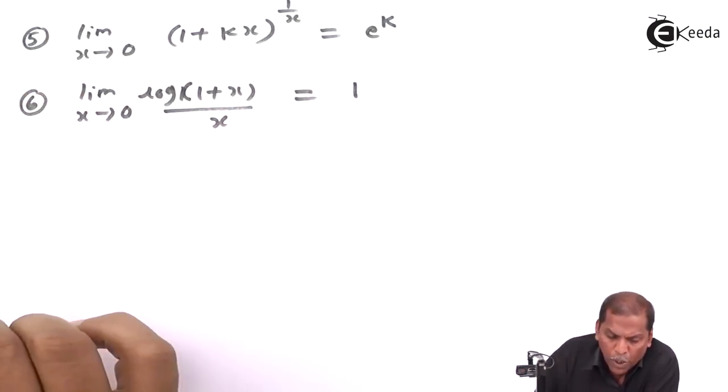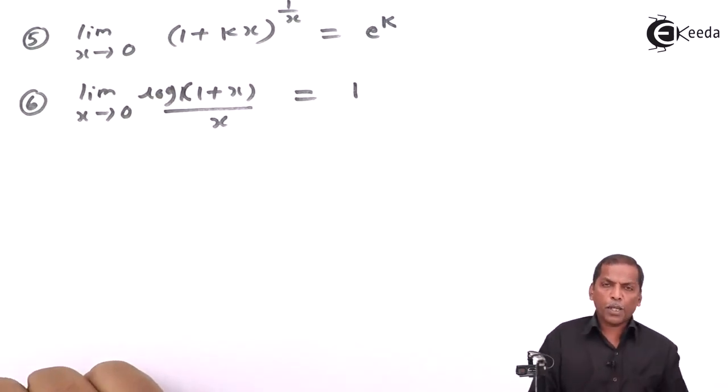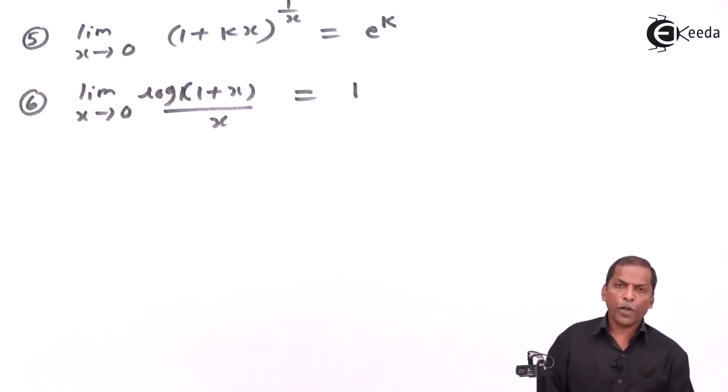So these are the six results we use here without proof for solving problems based on exponential as well as logarithmic functions. This is all about the limits of exponential and logarithmic functions. Thank you.